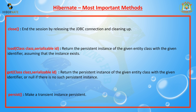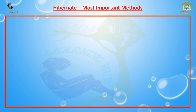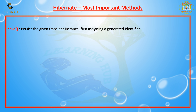The next method is persist. The persist method makes a transient instance persistent — it is used to save the data into the database. The persist method does not return anything.